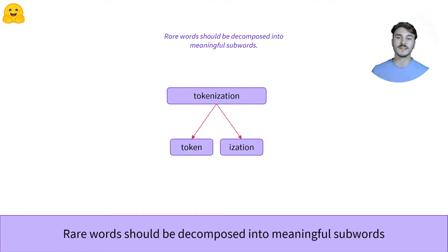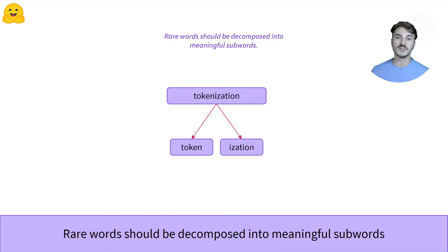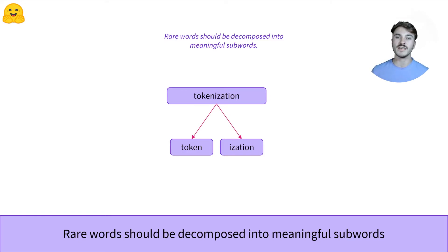Another example is a complex word like "tokenization," which can be split into meaningful subwords. The root of the word is "token," and "-ization" completes the root to give it a slightly different meaning. It makes sense to split the word into two: "token" as the root of the word, labeled as the start of the word, and "-ization" as additional information, labeled as a completion of the word.